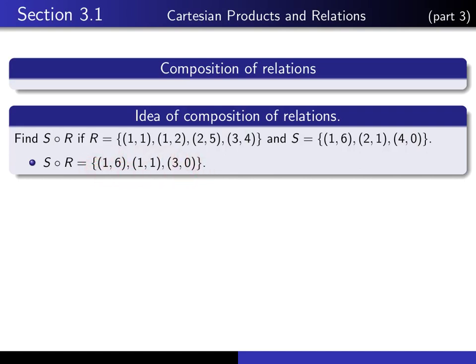Now look again at this (1,6). We got (1,6) because R related 1 to 1, and this 1 was related to 6 by S. So we have this linking term, this middle term 1, 1 is common to both. Similarly, this (1,1) came from looking at (1,2) and (2,1). So this 2 is the linking piece here. And (3,0), we got (3,0) in the composition because we had (3,4) and (4,0). So again, we have this linking term, this 4.